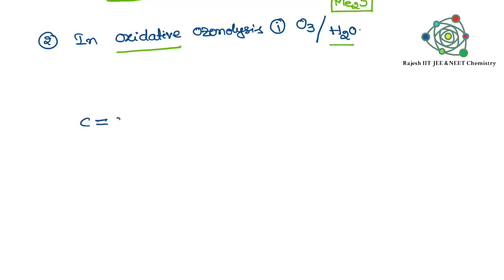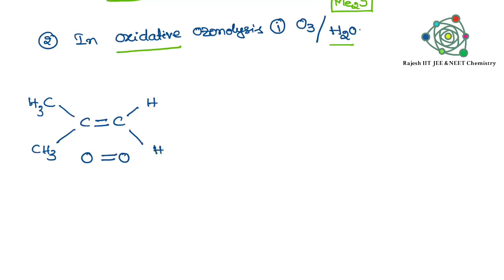Let us learn the two types of Ozonolysis with the help of an example. Here we have a compound with a double bond. Write O double bond O — this is a simple trick. After that, the two double bonds between the two carbons and the two oxygens get separated, and you will get one product on each side.